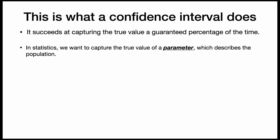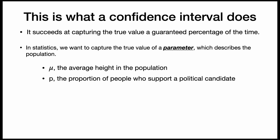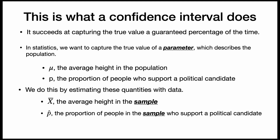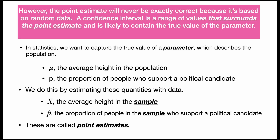In statistics, we want to capture the true value of a parameter which describes the population. We might want to estimate mu, the average height, or p, the proportion of people who support a political candidate. We do this by estimating these quantities with data — we estimate x-bar, the average height in the sample, or p-hat, the proportion of people in the sample who support the political candidate. These are called point estimates: they are our single best guess of the parameter. However, the point estimate will never be exactly correct because it is based on random data.